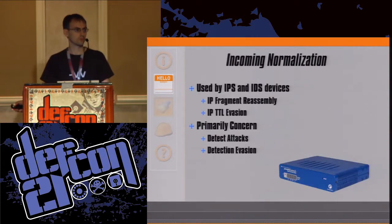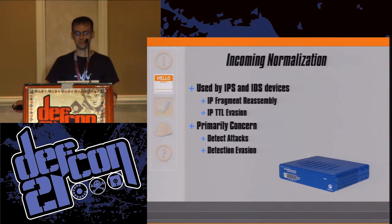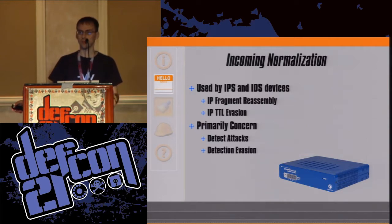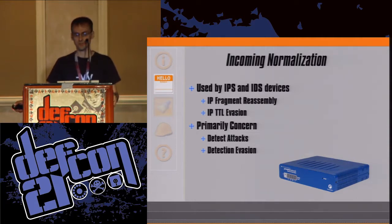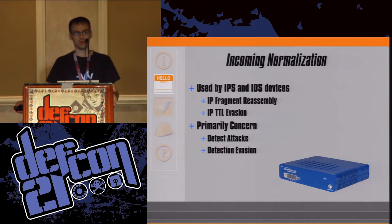This brings us to the first real normalization-only solution — used by IPS and IDS devices. Their main job, as far as NIST space is concerned, is IP fragment reassembly and TTL checks to make sure there is no evasion going on. It's a normalization-only solution. Primary concern: detecting attacks and evasions. But once again, not enough, nor the right kind of normalization — not effective for fingerprinting prevention, nor practical, lacking the ability to cover the entire network.